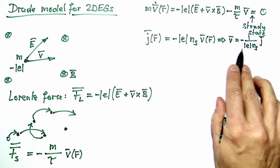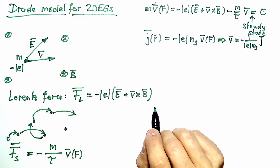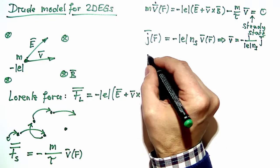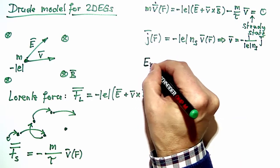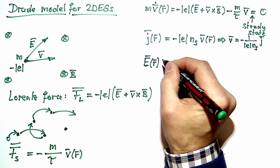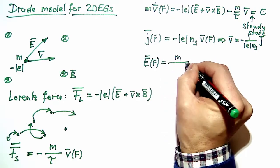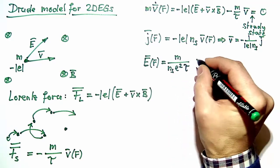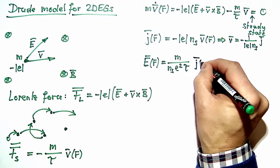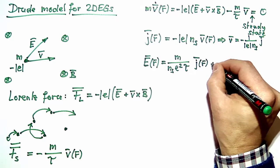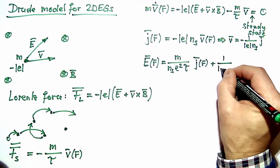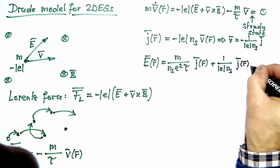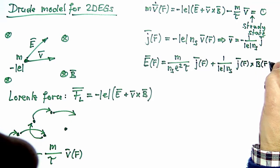The next step is to insert this expression into the equation of motion and extract an expression for the electric field. We find that the electric field E(r) is given by m/(ns·e²·τ) times the current density j(r), plus a second term 1/(e·ns) times the current density j(r) cross product with the magnetic field B(r).